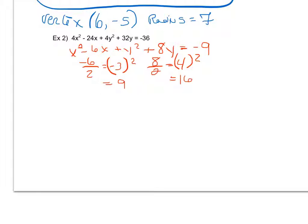And now I'm going to add 9 and 16 to both sides giving me x squared minus 6x plus 9. And then for my y's it gives me plus y squared plus 8y plus 16 equals negative 9. And I have to add the 9 and 16 to both sides.